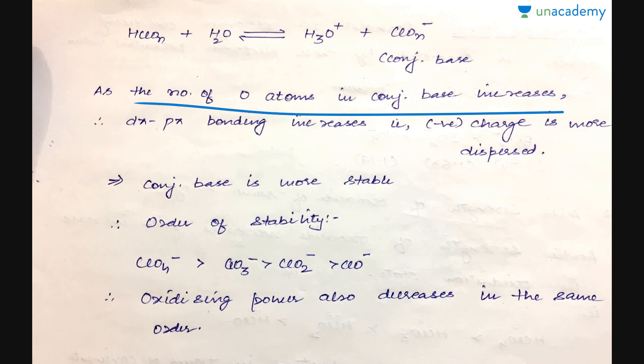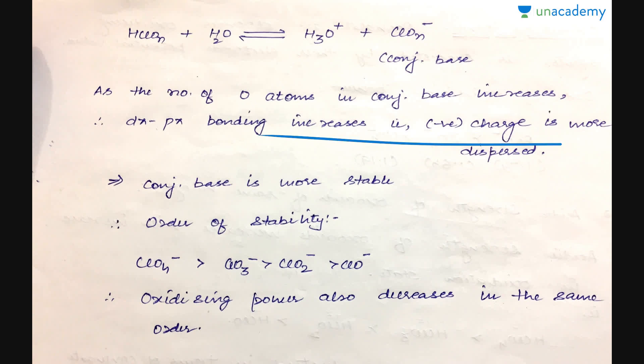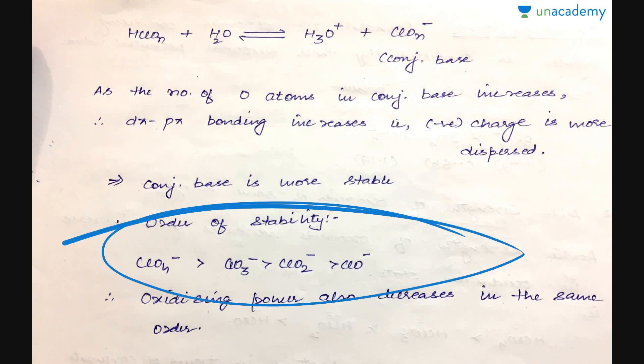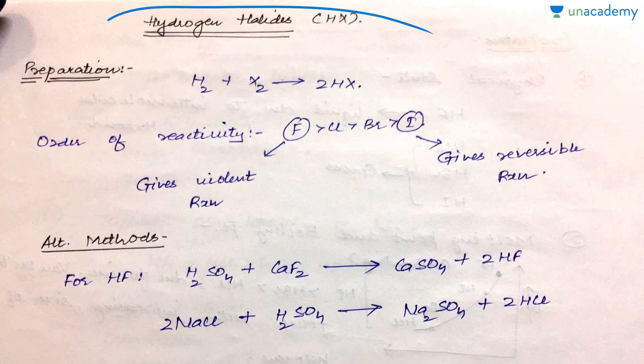As the number of oxygen atoms in a conjugate base increases, dπ–pπ back bonding increases, because chlorine has vacant d orbitals and oxygen has lone pairs. More oxygen atoms means more back bonding, so the negative charge is more dispersed and the conjugate base is more stable. The stability order is ClO₄⁻ > ClO₃⁻ > ClO₂⁻ > ClO⁻. A more stable conjugate base means a weaker base and a stronger conjugate acid, so HClO₄ > HClO₃ > HClO₂ > HClO.